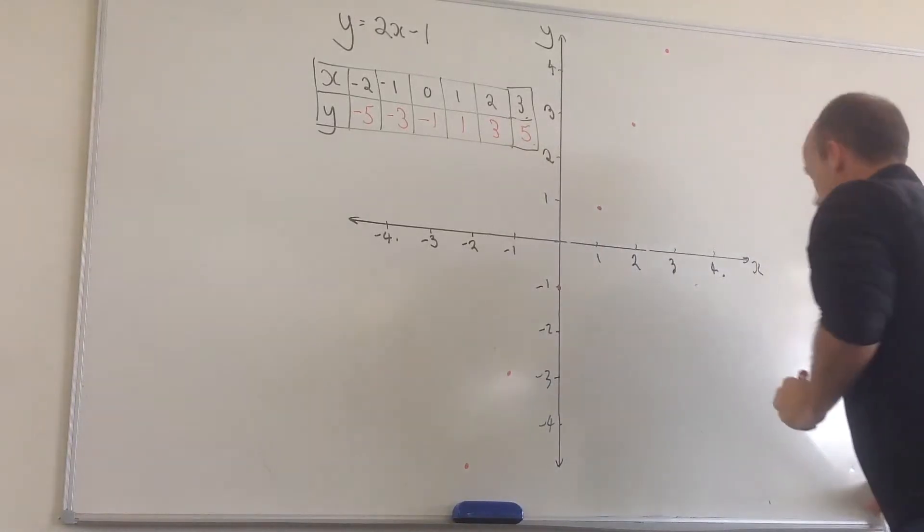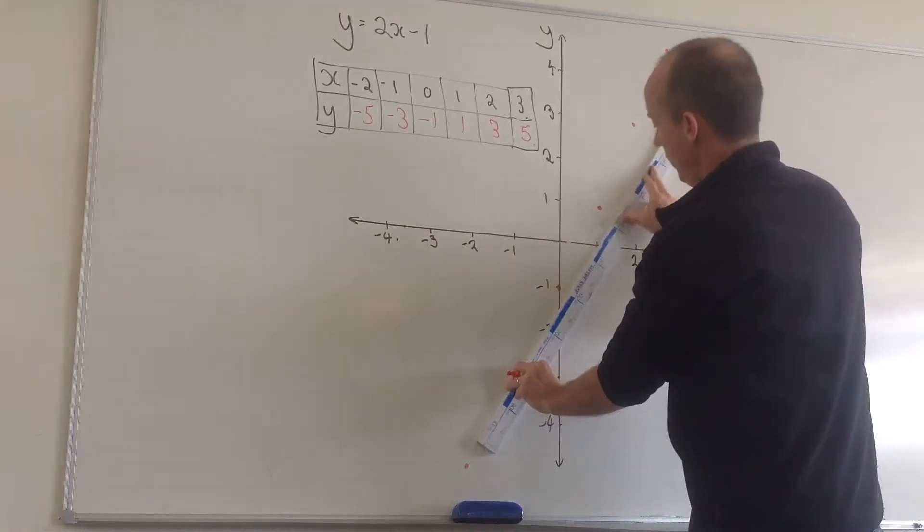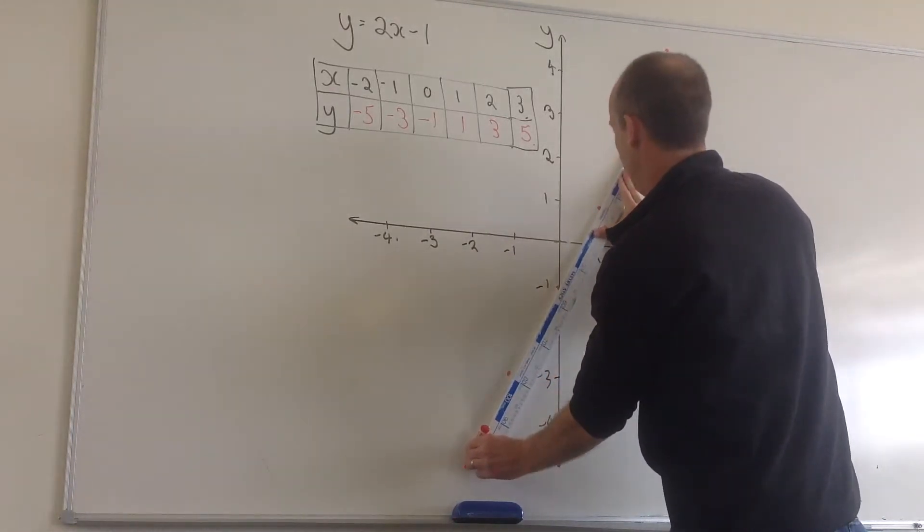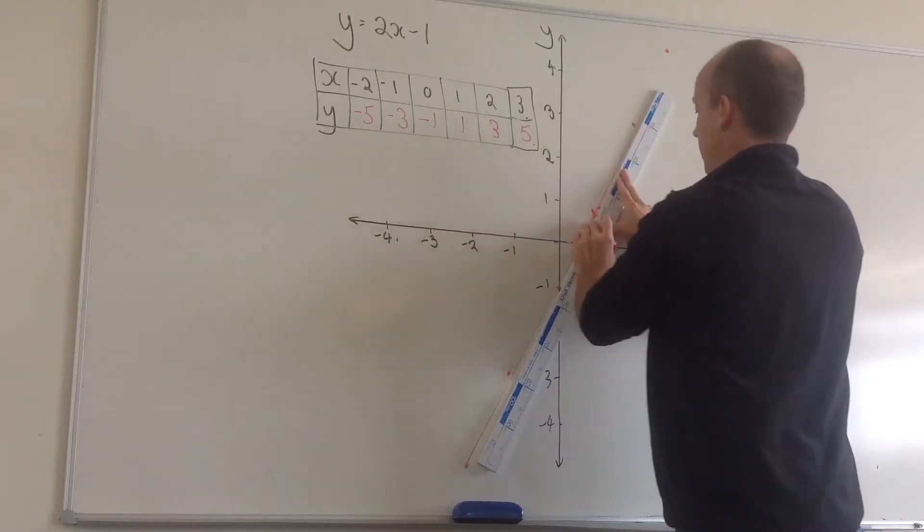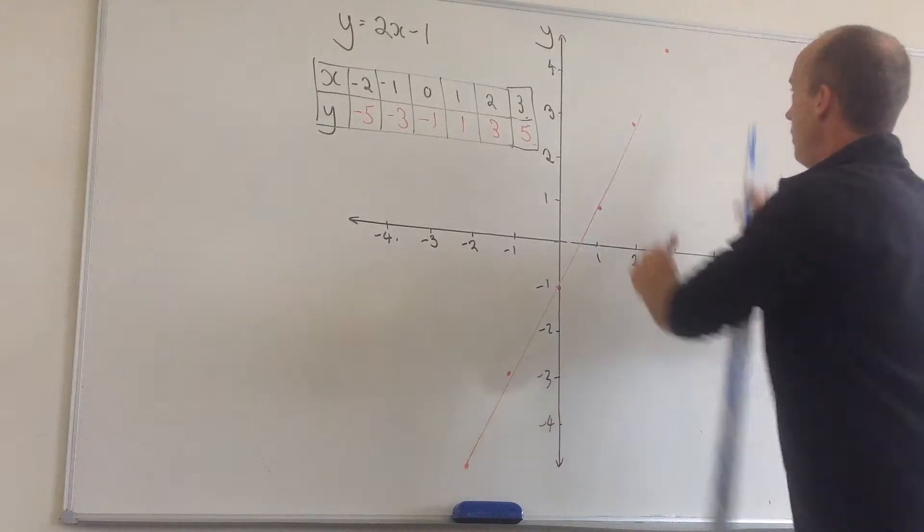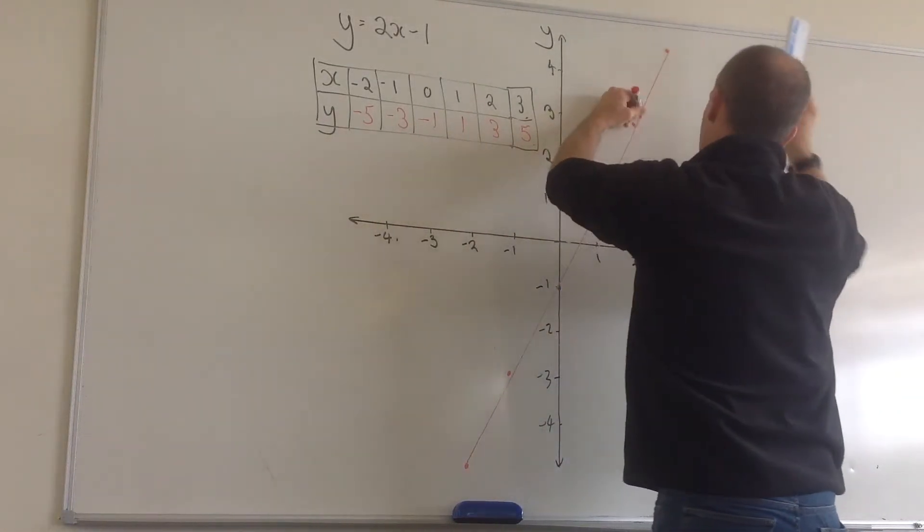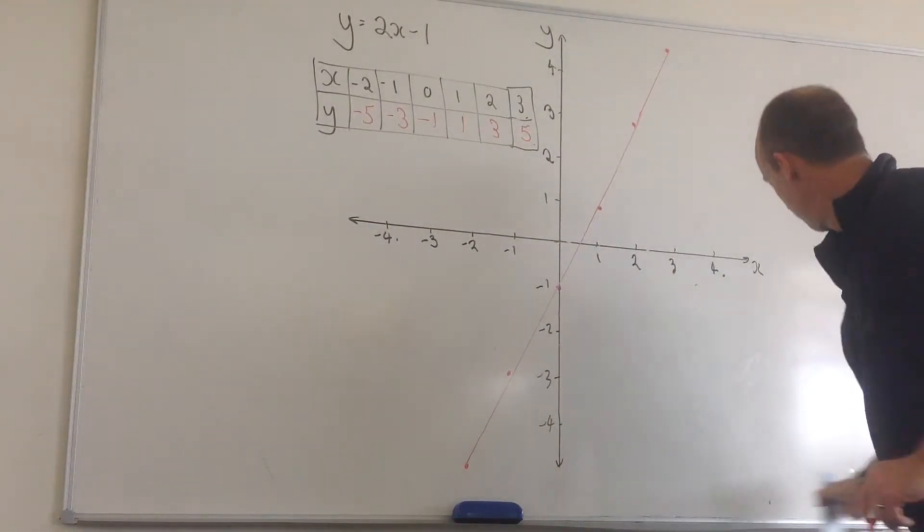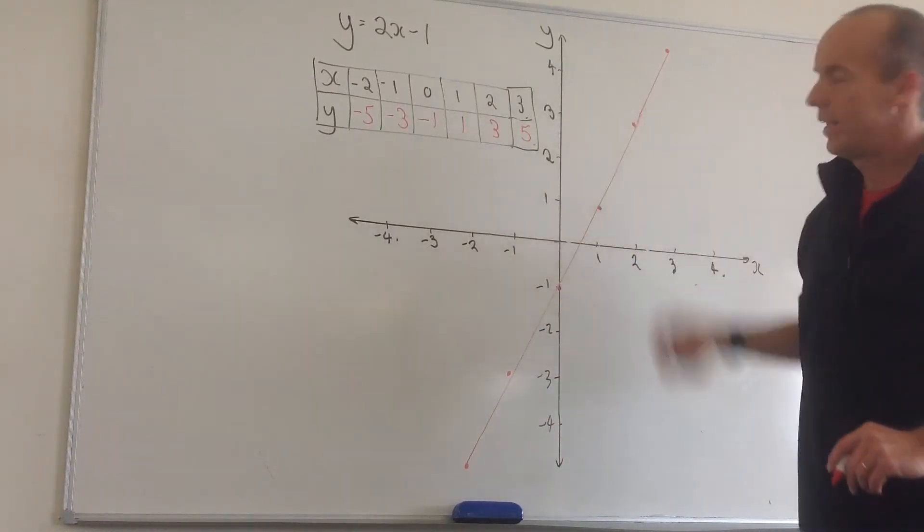Now, if I've done that correctly, what I should have is all my points. And you guys should be neater than I am because I'm doing this without carefully lined pages. But those points that we put on should make a straight line.